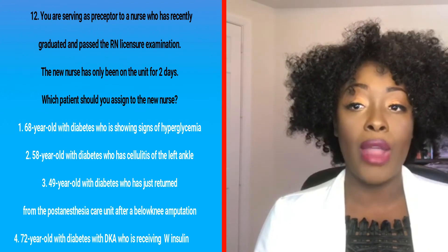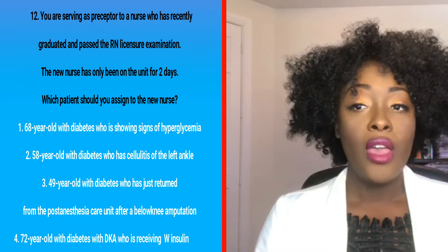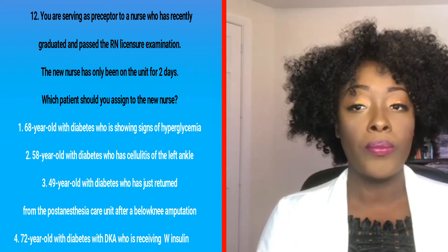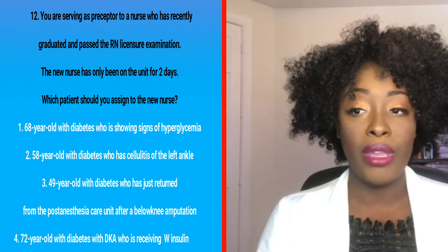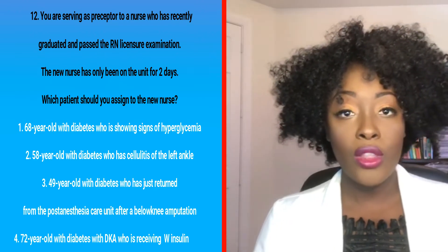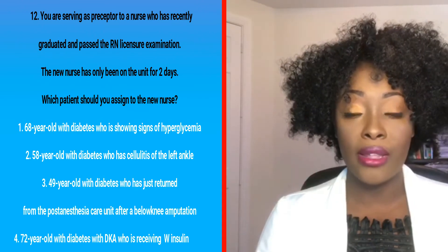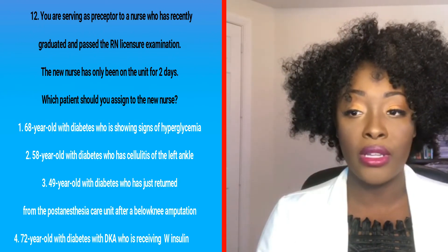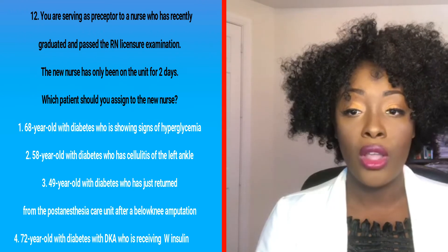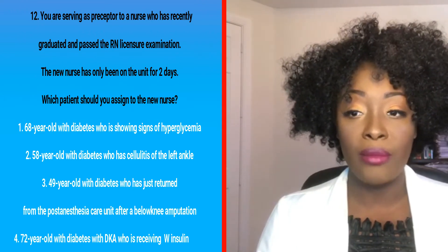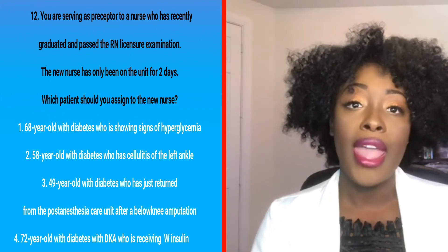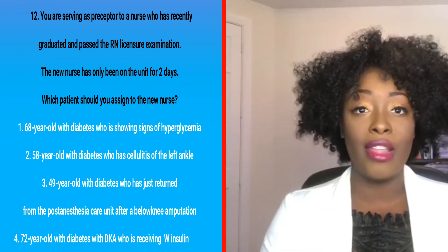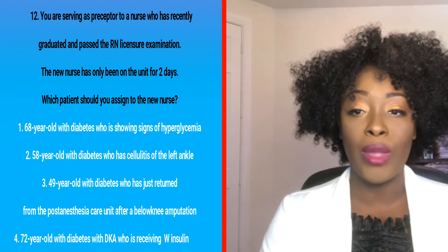Number 12: you're serving as a preceptor to a nurse who recently graduated and passed the RN licensure examination. The new nurse has only been on the unit for two days. Which patient should you assign to the new nurse? Choices are: one, a 68-year-old with diabetes showing signs of hyperglycemia; two, a 58-year-old with diabetes who has cellulitis of the left ankle; three, a 49-year-old with diabetes who just returned from the post-anesthesia care unit after a below-the-knee amputation; or four, a 72-year-old with diabetes with DKA receiving IV insulin.